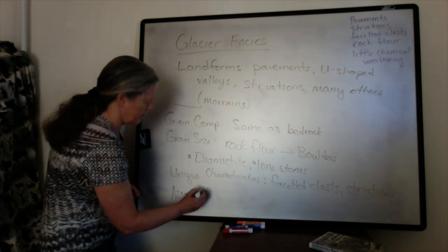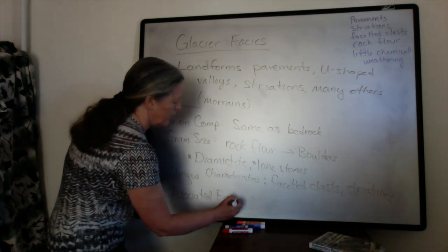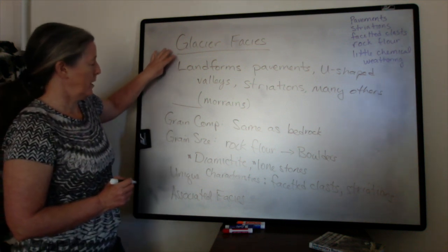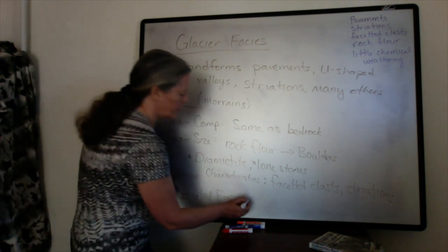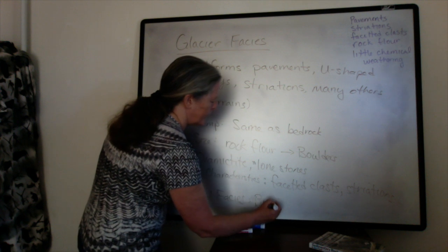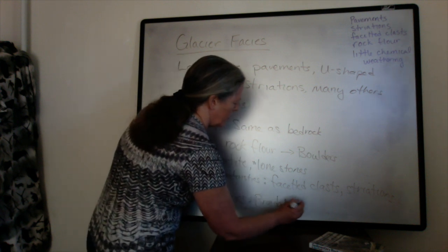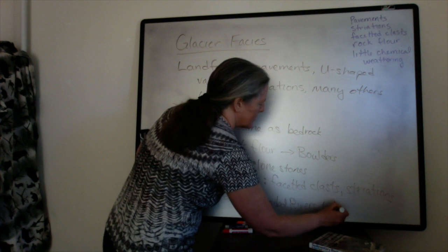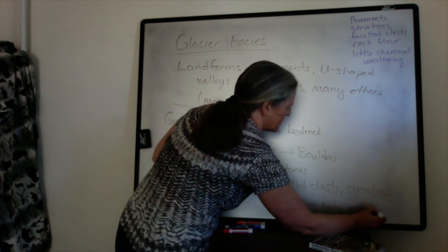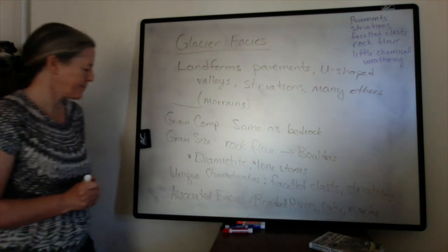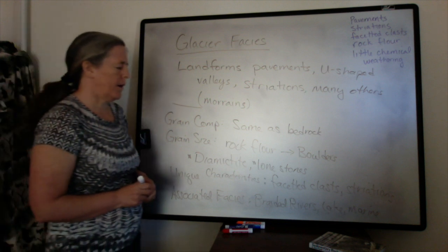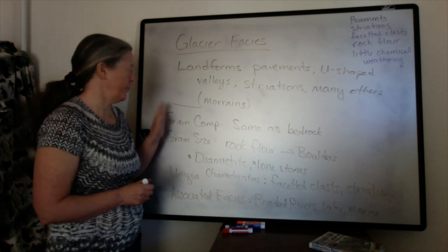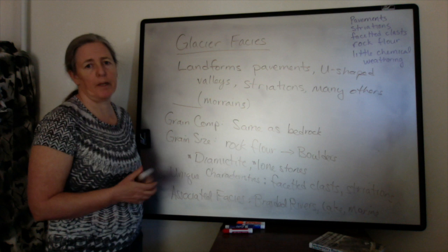We can also define associated facies — environments next to glacial environments where some of the sediment is reworked. These would include, for example, braided streams or river deposits, as well as marine and lake deposits. In lake and marine deposits, you often see dropstones, and turbidites are common due to the rapid deposition of sediment from the melting of glacial ice.